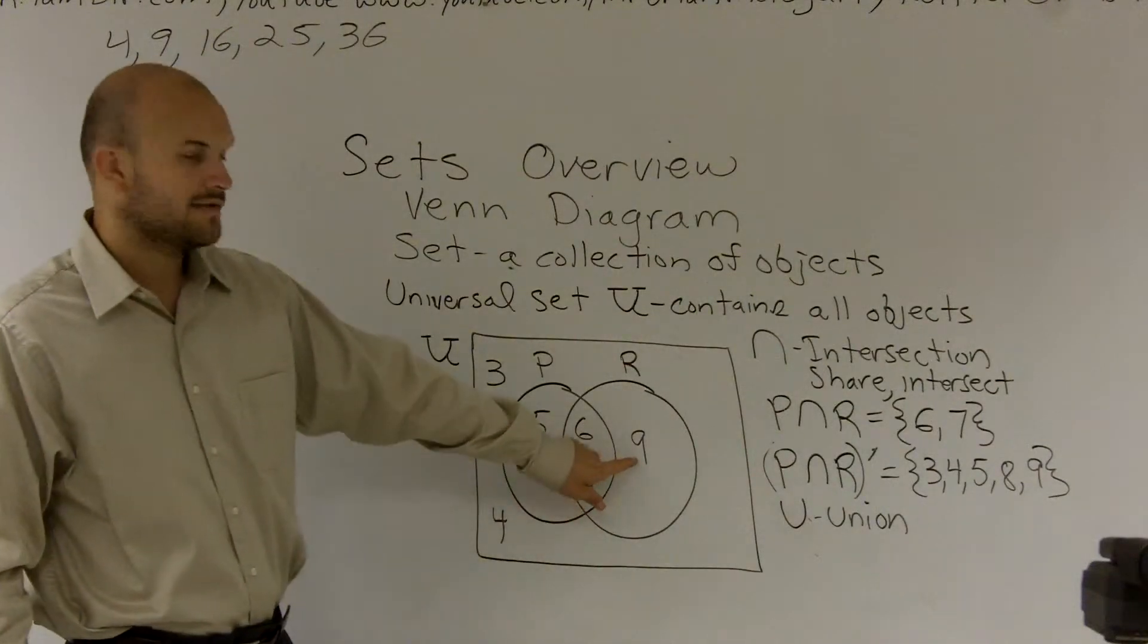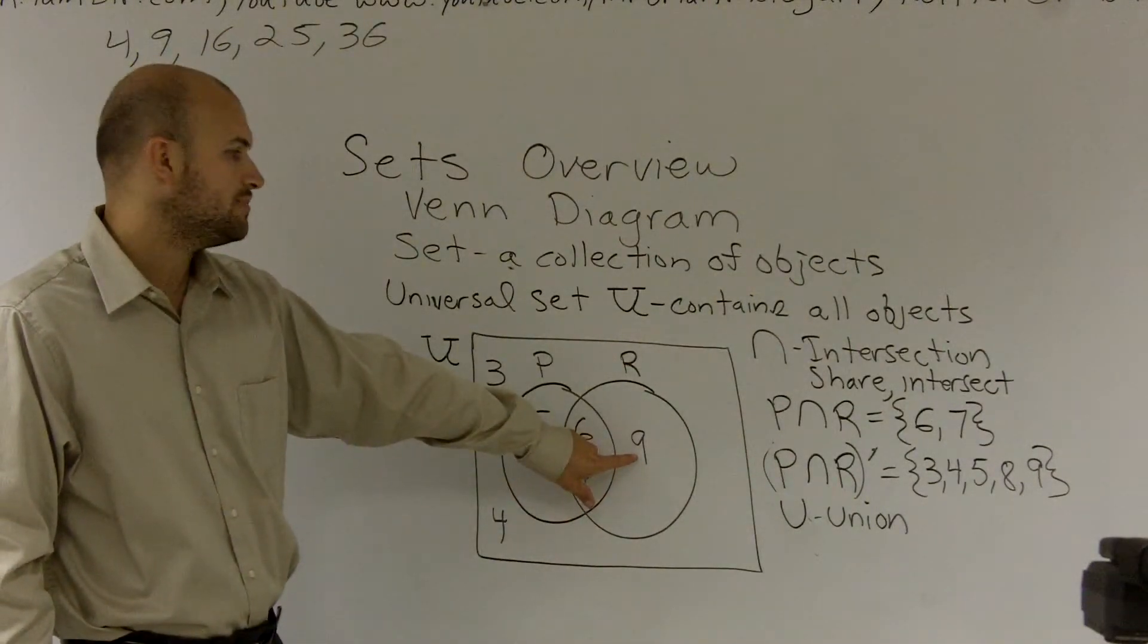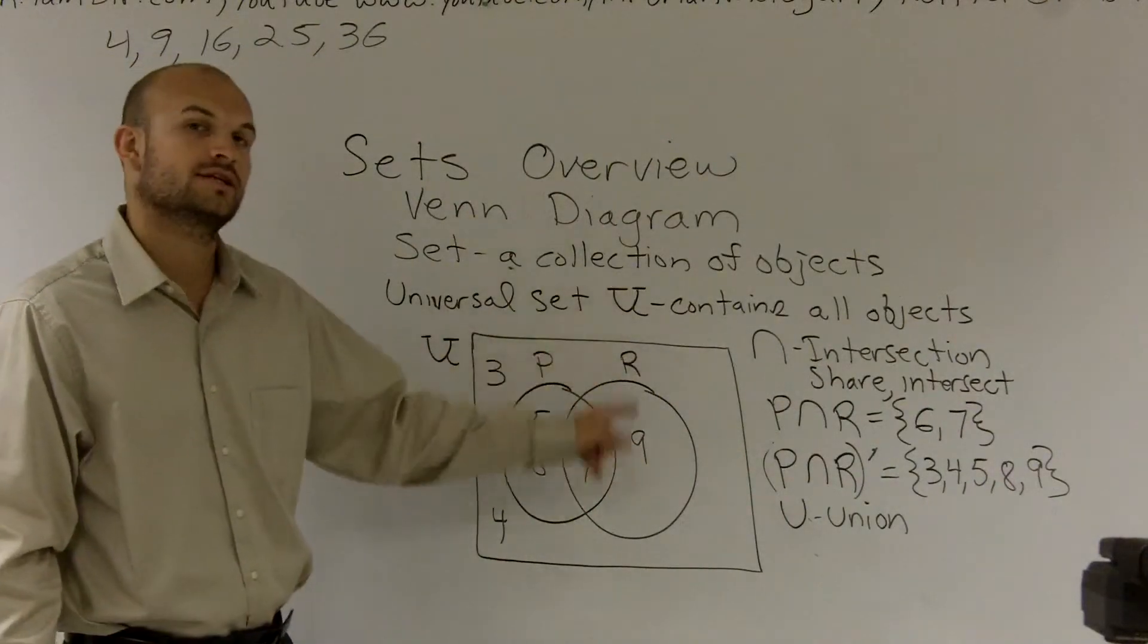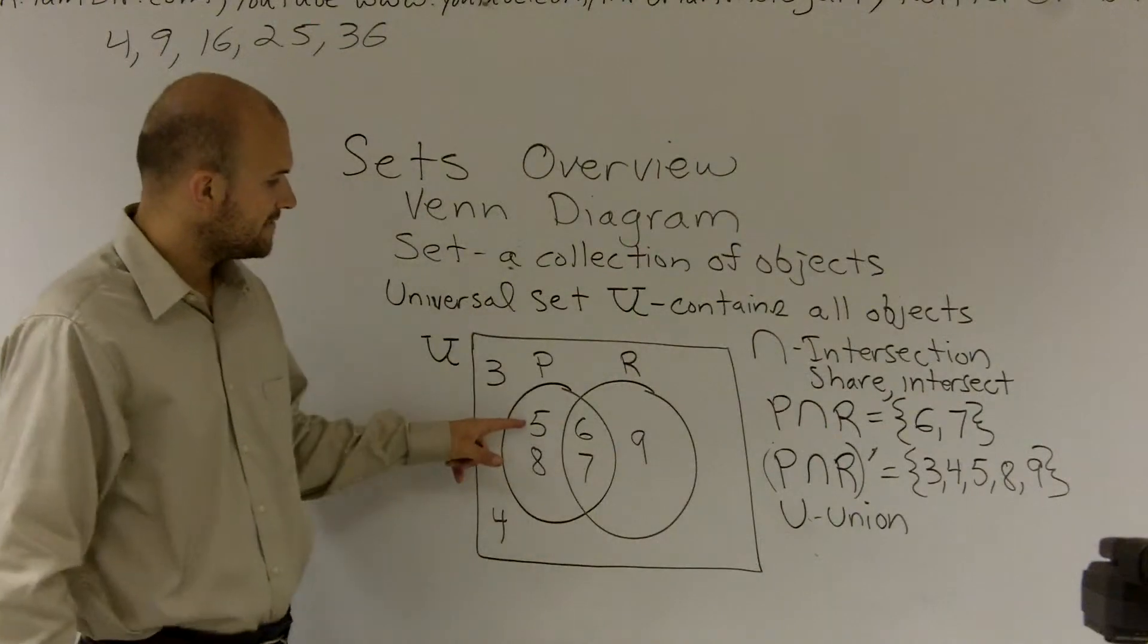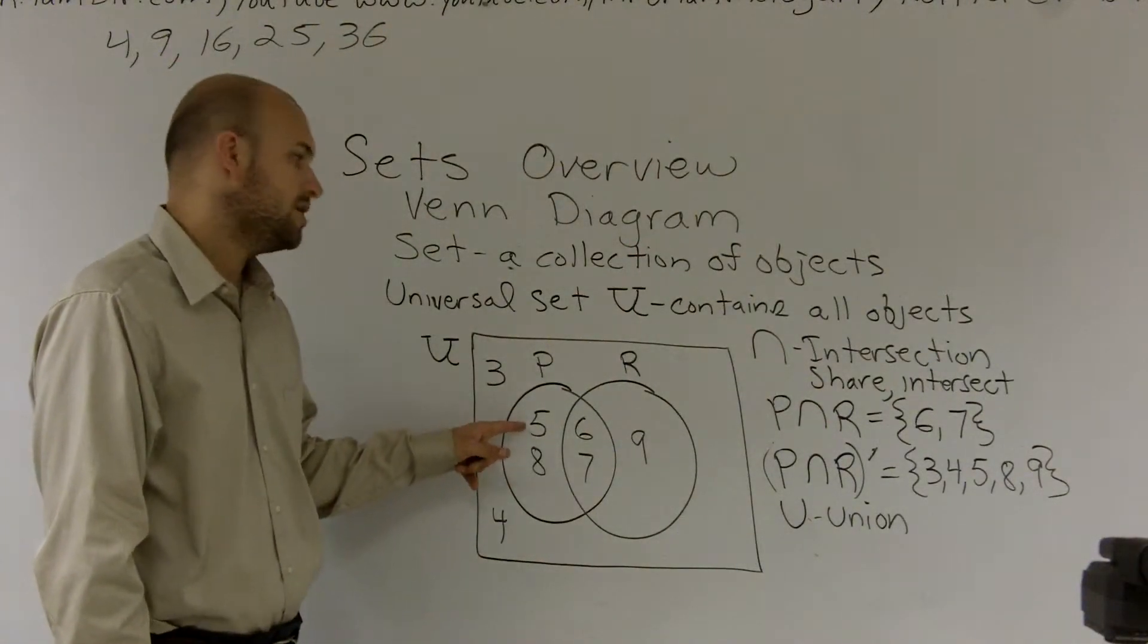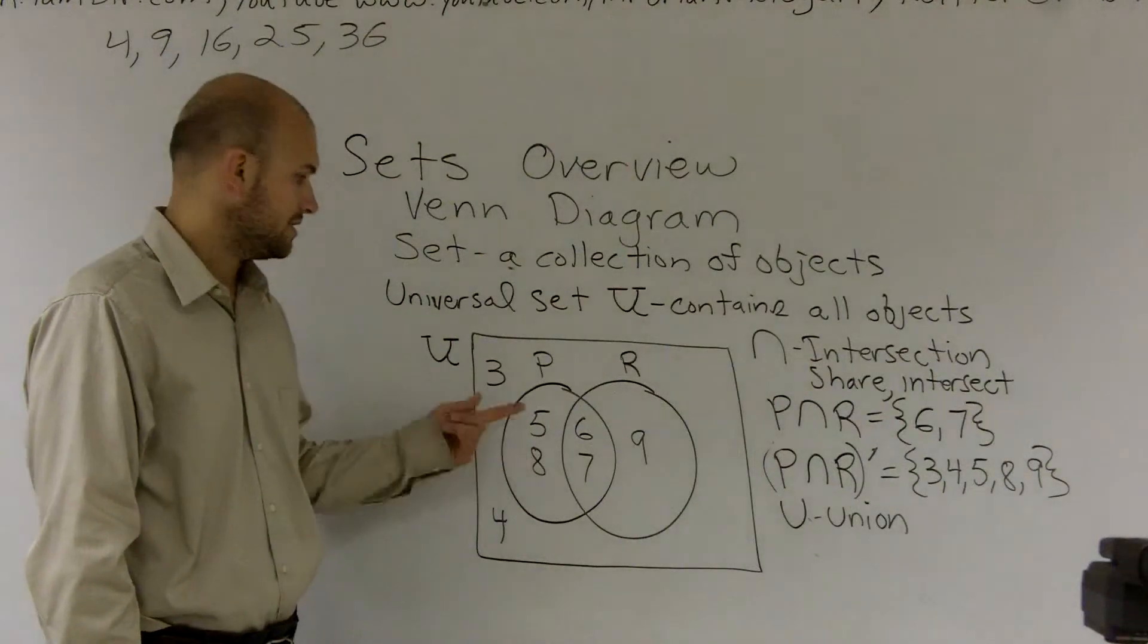What I'm saying is, if you look at number 9, is that in P, or is it in R? And you could say, yes, it is actually in the circle, it's set R. You can look at 5. Is 5 in set P, or is it in set R? And you could say, yes, it's in both of those, or it's in P.